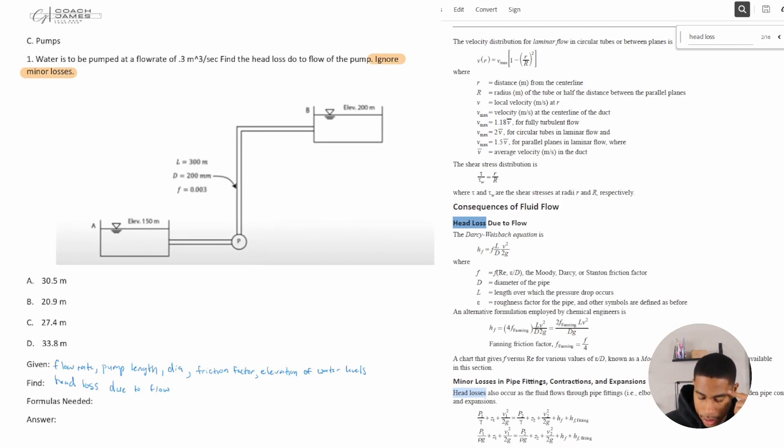Looks like we're missing v, so we'll write out the information that we're given. Hf equals f times l over d times v squared over 2g. V is equal to question mark. G equals 9.81 meters per second squared. The only thing we now need is v, and the main thing we're solving for is head loss.